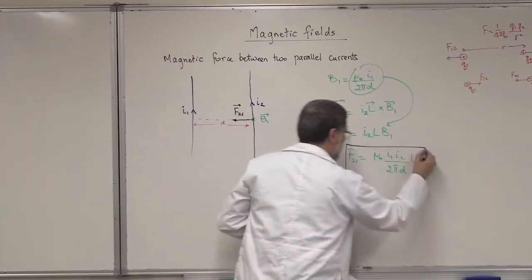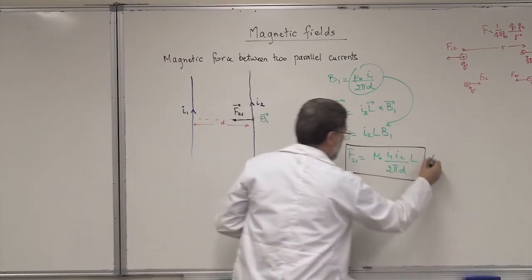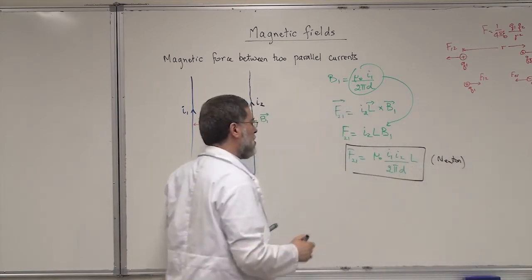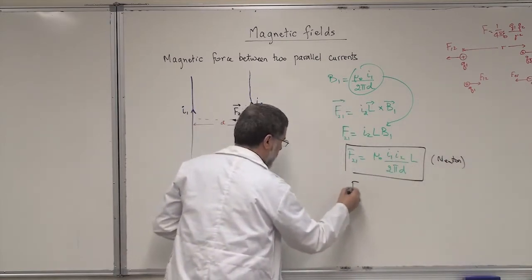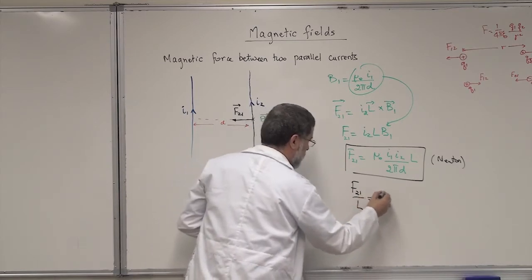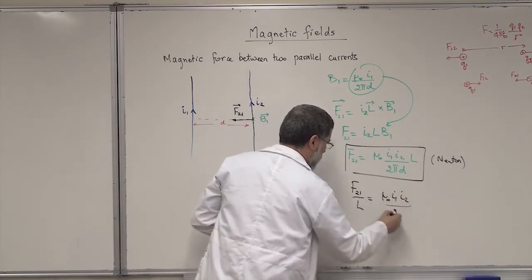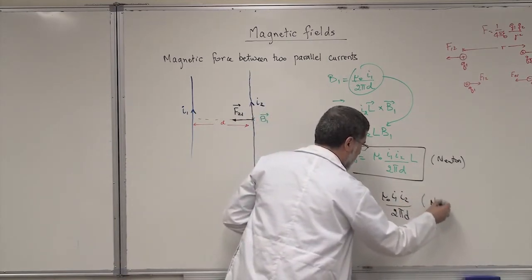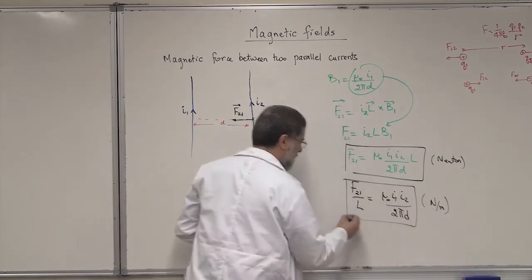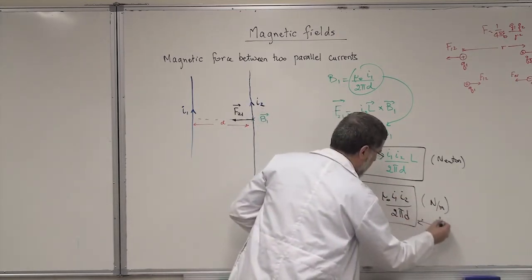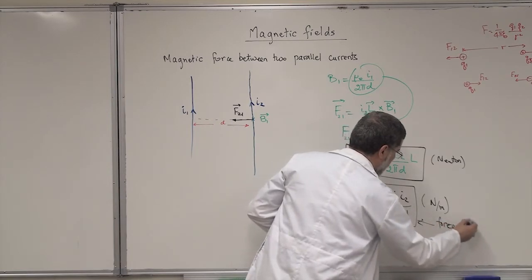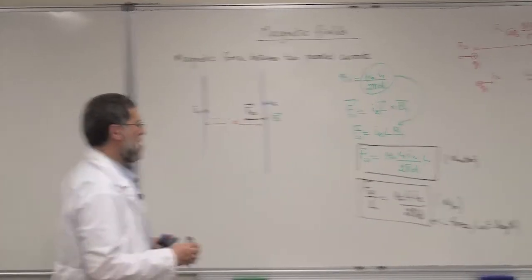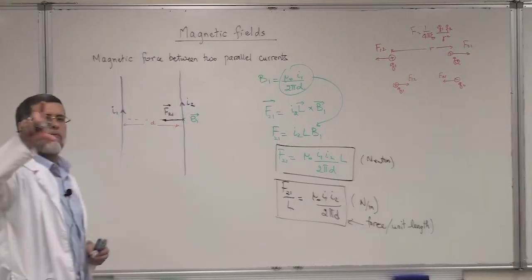That force is in newtons when you use SI units. Sometimes they write the force per unit length, which is F over L equals mu-zero I1 I2 over 2 pi d, and that's in newtons per meter. Since these are very long wires, it makes sense to express force per unit length — for every meter of wire, how much force is there.